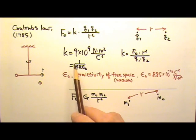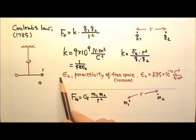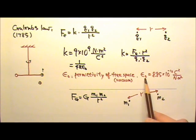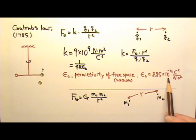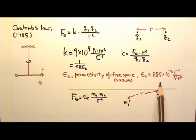This k is sometimes written as 1 over 4 pi epsilon naught, where the epsilon naught is called the permittivity of free space or vacuum. Epsilon naught equals 8.85 times 10 to the negative 12th. And you do not have to memorize the k or the epsilon naught.